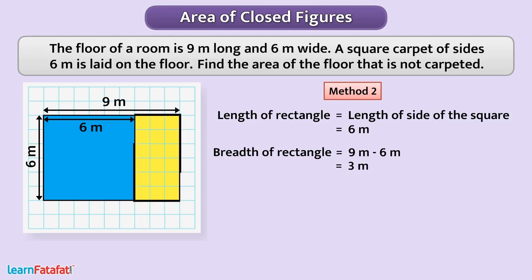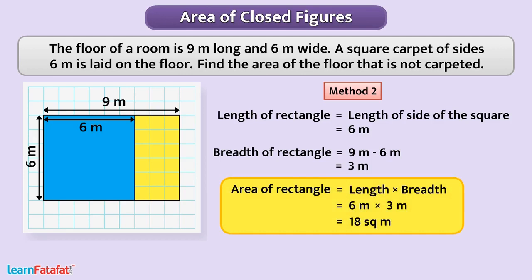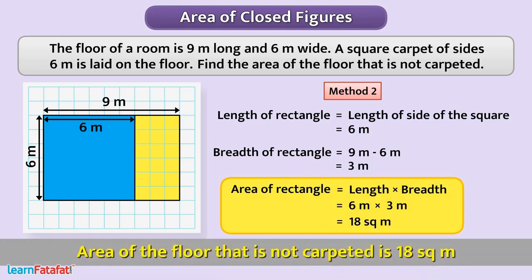So, the area of rectangular region will be, length 6 meter into breadth 3 meter is equal to 18 square meter. This is how, you can solve the same question in variety of ways.